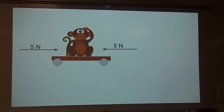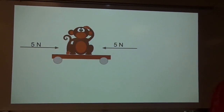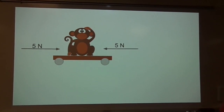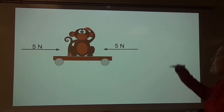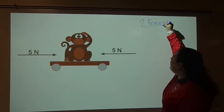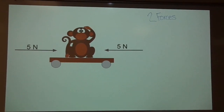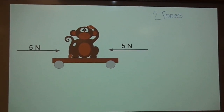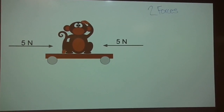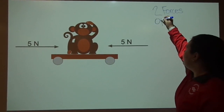This is our first example. How many forces are acting on this monkey? Hopefully you said two, because there are two forces acting on this monkey. Our next step is to ask ourselves: are our forces or our arrows pointing in the same direction or opposite direction? They are in opposite directions.